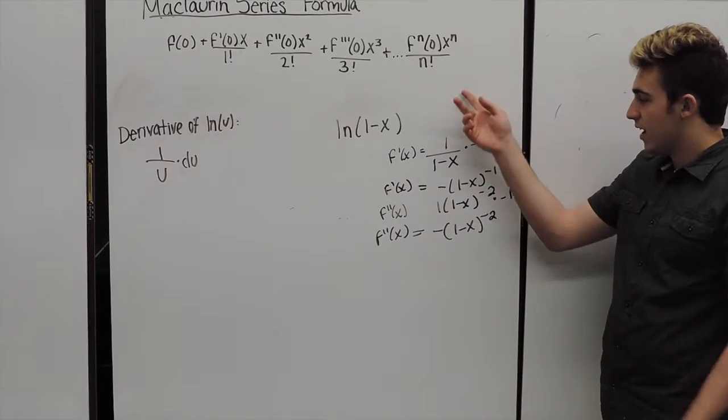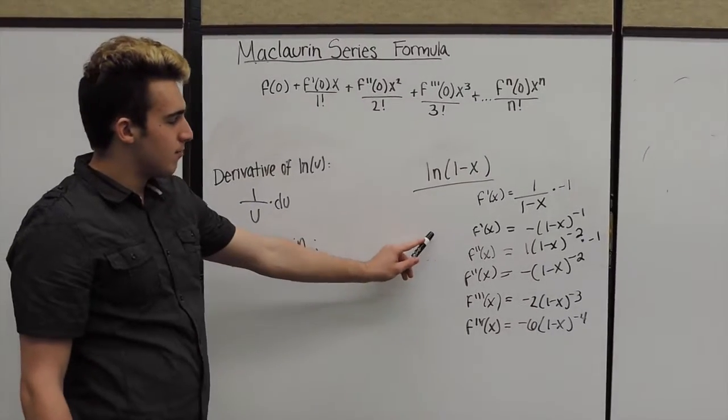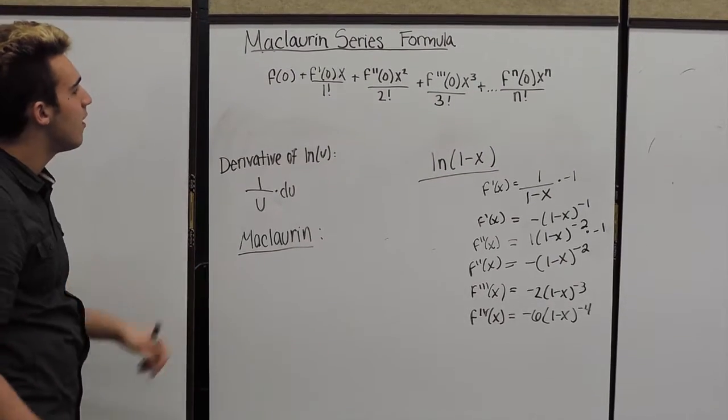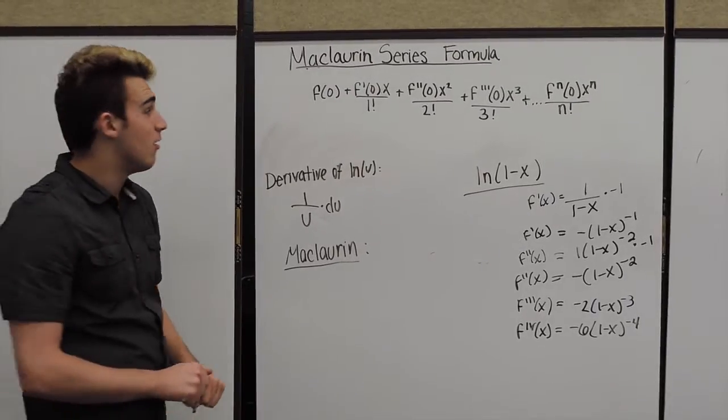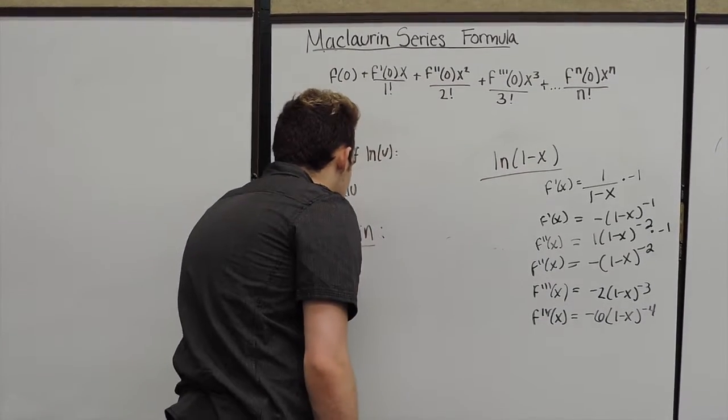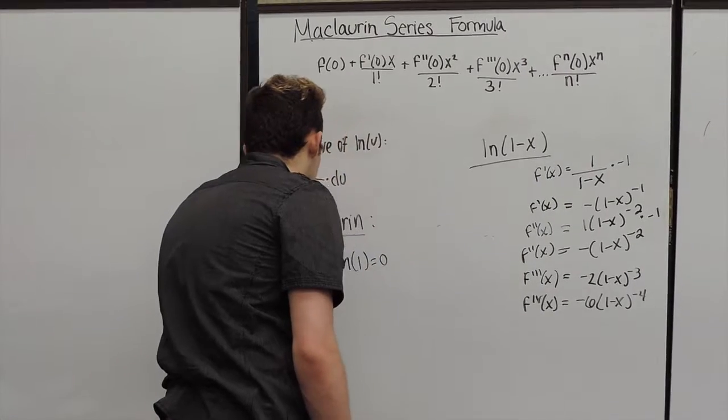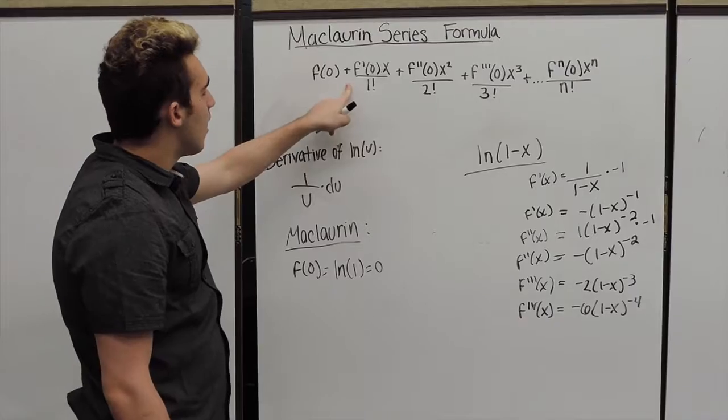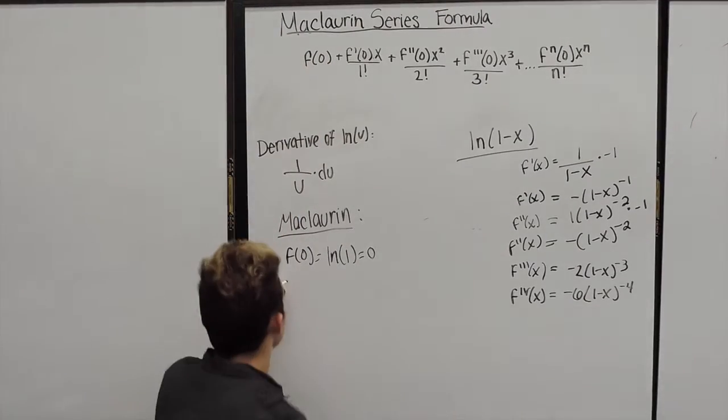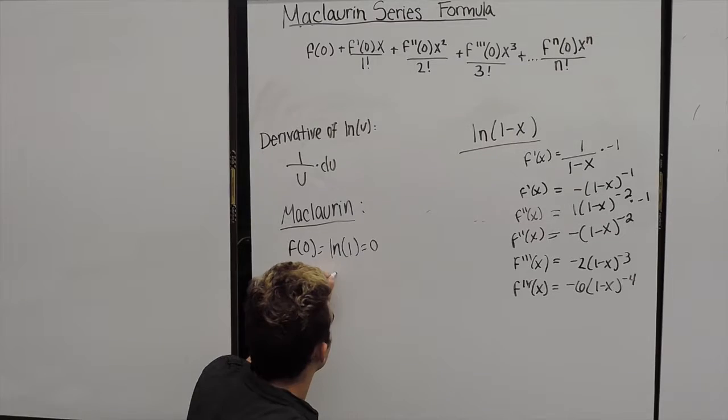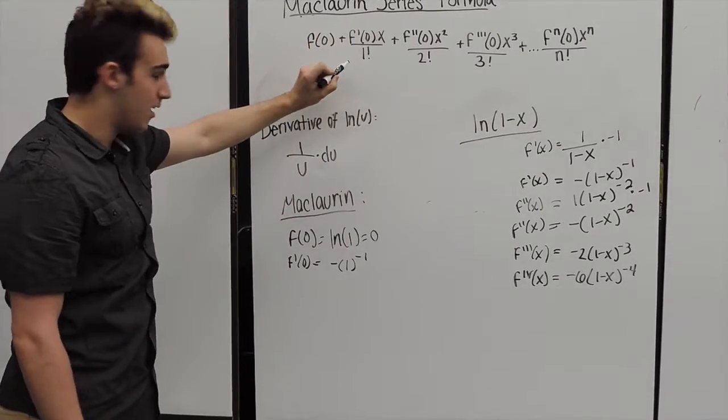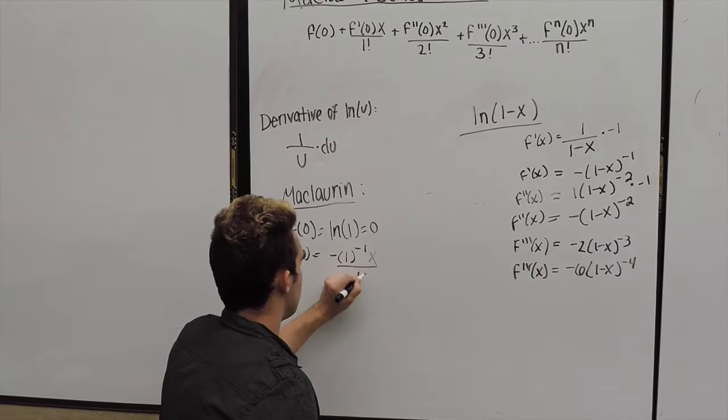And then we will keep going down until your desired n value. So once you have your n derivatives of ln of 1 minus x, we are ready to construct our Maclaurin series. Remember that Maclaurin is centered at x equals 0. So our f of 0 value, we're going to have ln of 1 minus 0, and ln of 1 is equal to 0. Our f prime of 0 is negative 1 to the negative 1, and then we're multiplying by x and dividing by 1 factorial.